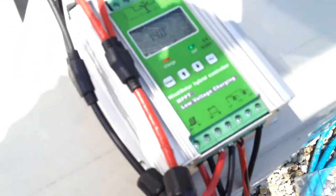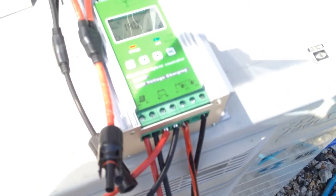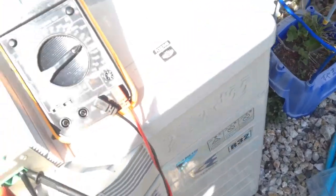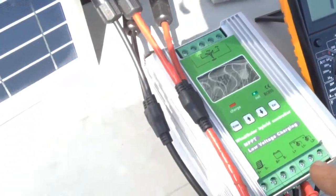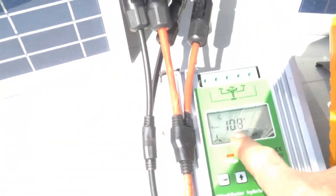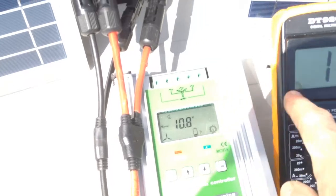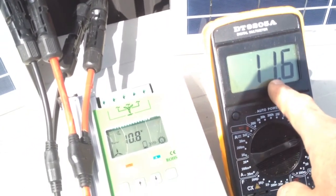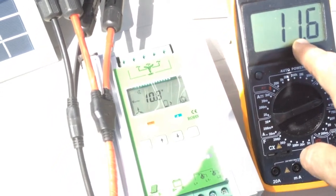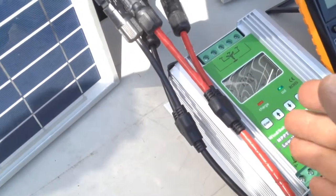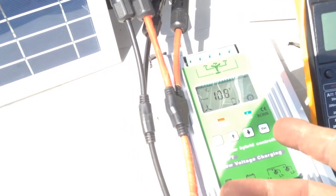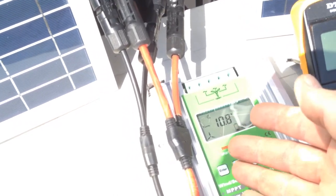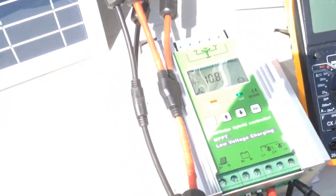This unit is actually putting out 14 volts, even though the battery is reading 14. Actually, the battery is reading 10.8, but it's putting out 11.6. It's doing what MPPT is supposed to do. It's putting out more charge than what it has.